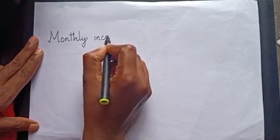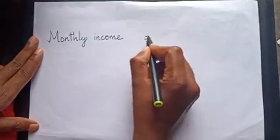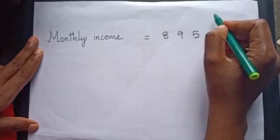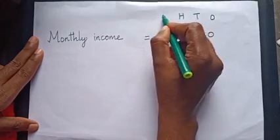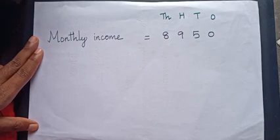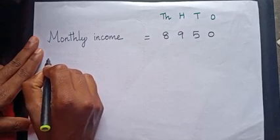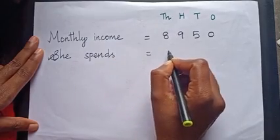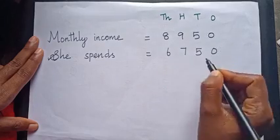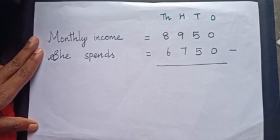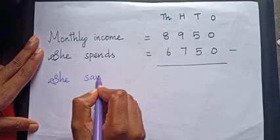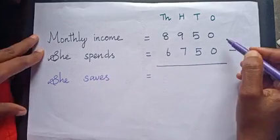First we have to write the given amounts. Monthly income is equal to 8,950. Write the place values. She spends 6,750. We want to find her saving amount. She saves is equal to...